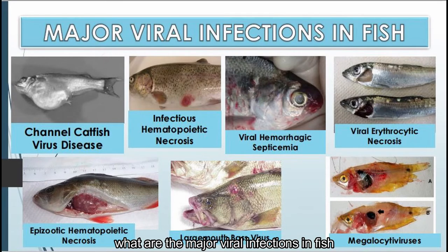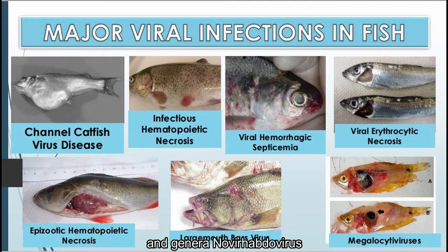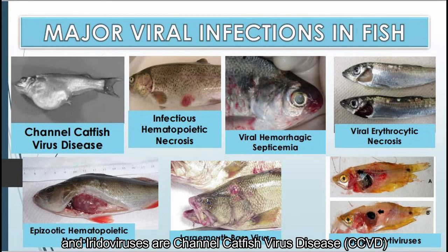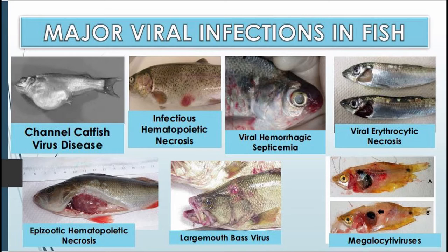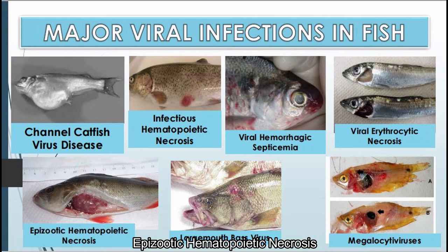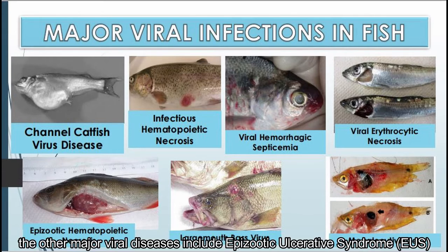What are the major viral infections in fish? Some of the major viral infections in aquaculture under family herpesviruses (alloherpesviruses), genera Novirhabdovirus and Iridovirus, are channel catfish virus disease (CCVD), infectious hematopoietic necrosis, viral hemorrhagic septicemia, viral erythrocytic necrosis, epizootic hematopoietic necrosis, largemouth bass virus, and megalocytivirus. Other major viral diseases include epizootic ulcerative syndrome (EUS), grass carp hemorrhagic disease, spining tilapia syndrome, viral nervous necrosis, and lymphocystis disease.